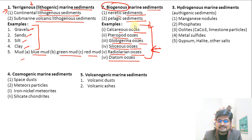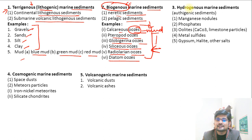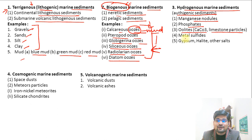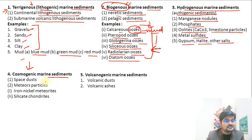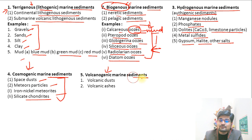Ooze is basically the remains of dead animals — like a mud deposition on the ocean floor. Hydrogenous marine sediments, also called authigenic sediments, include manganese nodules, phosphate nodules, oolites (calcium carbonate or limestone particles), metal sulfides, gypsum, halite, and other salts. Cosmogenic marine sediments include space dust, meteor particles, iron-nickel meteorites, and silicate chondrites. Volcanogenic marine sediments include volcanic dust and volcanic ashes.